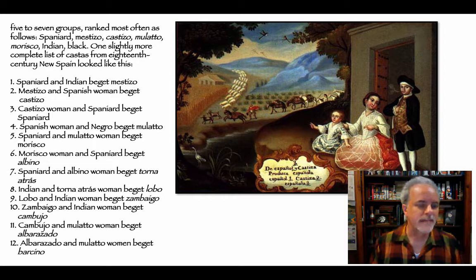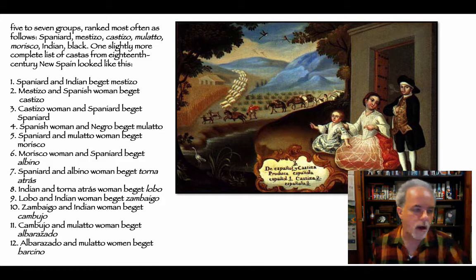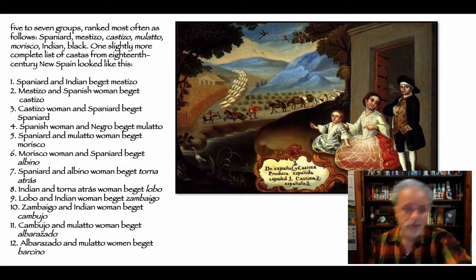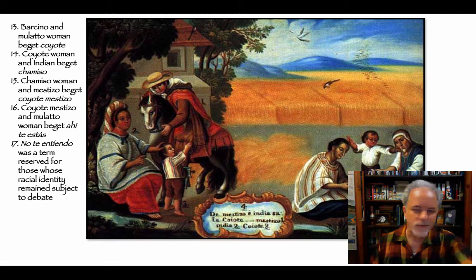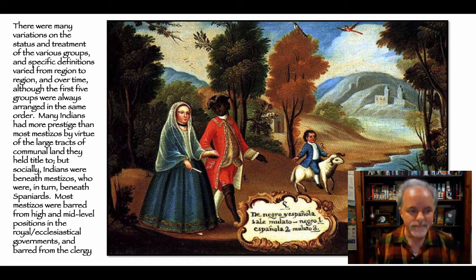More complete lists of castes from 18th-century New Spain are shown here — you can read through those. There were many variations on status and treatment of various groups, and specific definitions varied from region to region and over time, although the first five groups were always arranged in the same order. Many Indians had more prestige than most Mestizos by virtue of large tracts of communal land they held, but socially Indians were beneath Mestizos, who were in turn beneath Spaniards. Most Mestizos were barred from high and mid-level positions in the royal and ecclesiastical governments.